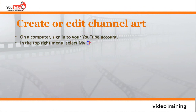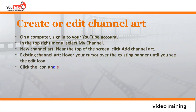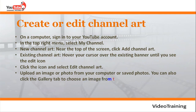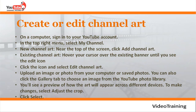To create or edit channel art on a computer, sign into your YouTube account and in the top right menu select My Channel. For new channel art, click 'Add channel art' near the top of the screen. For existing channel art, hover your cursor over the banner until you see the edit icon, click it, and select 'Edit channel art.' Upload an image from your computer, or click the Gallery tab to choose from the YouTube photo library. You'll see a preview of how the art appears across different devices; to make changes, select 'Adjust the crop.'